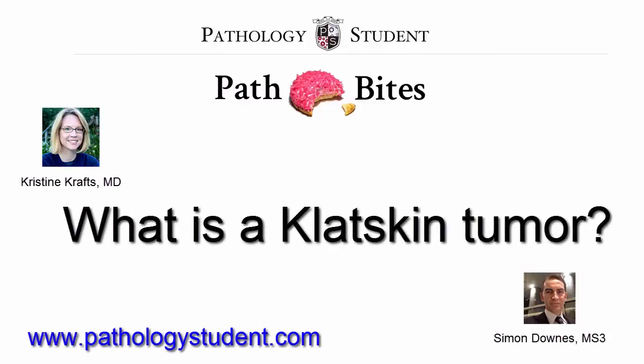A Klatskin tumor is a type of cholangiocarcinoma, a malignant tumor arising from bile ducts. We'll get to the specific thing that makes it a Klatskin tumor in a minute. Cholangiocarcinoma is the second most common liver malignancy after hepatocellular carcinoma. It can arise inside the liver or outside, but almost all cases arise outside the liver. The extra-hepatic cases of cholangiocarcinoma usually arise in one of two places.